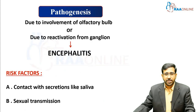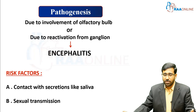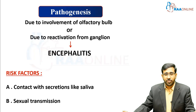Moving on to the pathogenesis: the virus is going to cause a febrile blister, followed by involvement of the olfactory bulb or latency in the particular ganglion. Herpes simplex has latency in the sacral ganglion and trigeminal ganglion. After many years, when immunity goes down, there is reactivation of the infection, involving the olfactory bulb or reactivation from the trigeminal or sacral ganglion.